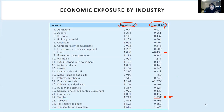With transaction exposure, it's easier to measure — for example, if I have a transaction of 10 million pounds, the size of my transaction is my exposure. With economic exposure, it's harder to measure, and most of the time we will measure economic exposure using the sensitivity of the asset value to exchange rate movements.